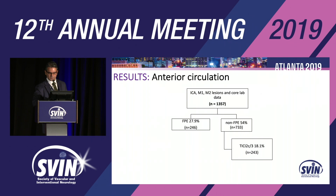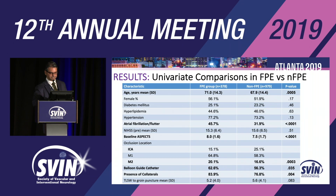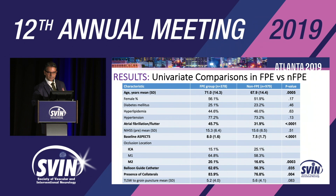Of patients who did not achieve first-pass effect, 18.1% did have a final recanalization of TICI 2C or 3. Looking at univariate comparisons between the FPE and non-FPE groups, there were some differences: the FPE group was slightly older (statistically significant), had a higher rate of atrial fibrillation, slightly better baseline core size with ASPECTS of 8, more M2 site occlusions, higher utilization of balloon guide catheter, and a higher rate of good collaterals — 83.9% versus 76.8%.